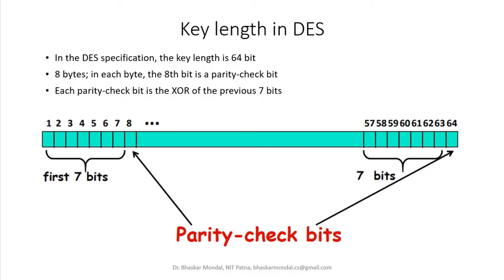You give a 64-bit key as input, but we call it a 56-bit key because out of this 64-bit key, every 8th bit is a parity bit — a parity check bit. These 8 bits are only used for error control. So every 8th bit is going to be truncated or dropped — a total of 8 bits are dropped, and finally you have 64 minus 8 = 56 bits.